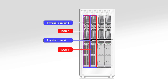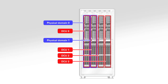The server chassis includes processor and I/O slots for four DCUs. However, you can purchase a server with a minimum of eight processors and configure them into either one or two physical domains as shown here. At a future time, you can purchase additional processor and I/O options to populate the remaining DCUs.